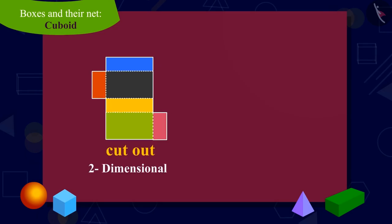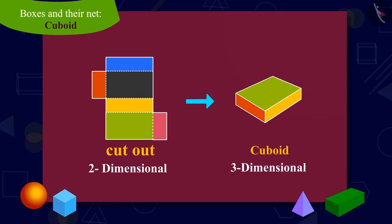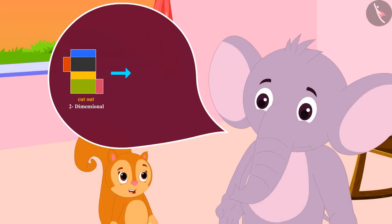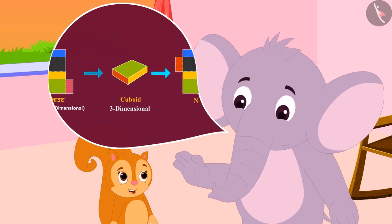Do you know that two-dimensional shapes like the cutouts of this cardboard, which when folded, make three-dimensional shapes like the cuboid? This is called the net of the shape. Appu also explained to Chanda about the cuboid and its net.